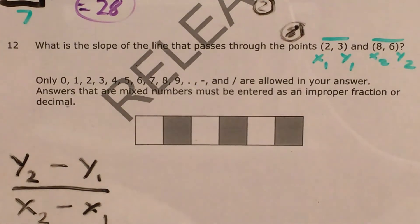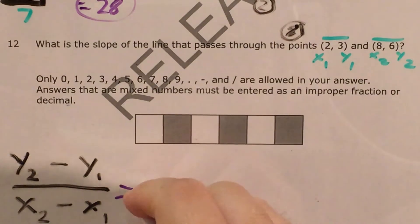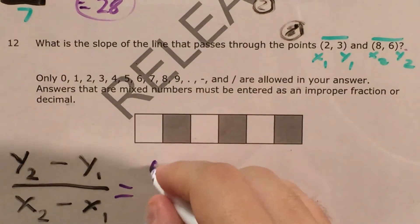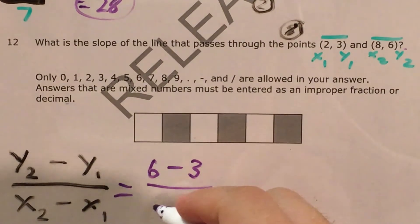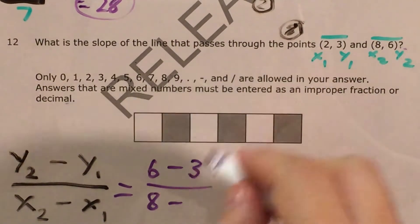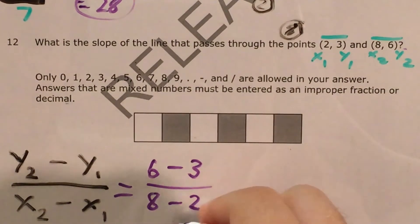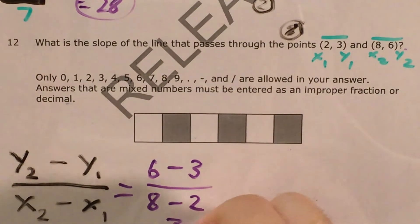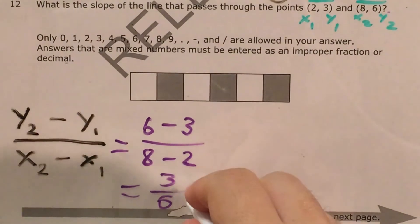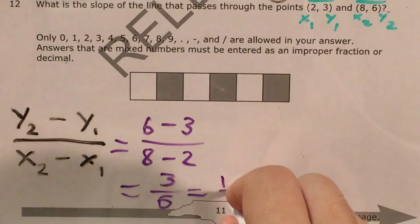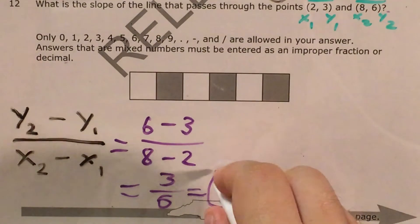So let's go ahead and plug those numbers in where they need to be plugged in. If I'm using this formula, then my y2 is 6, my y1 is 3. This is going to be divided by my x2, which is 8, minus my x1, which is 2. 6 minus 3 is 3, 8 minus 2 is 6. That's the same fraction that we got from looking on the graph, and I can still say that it just equals 1 half.